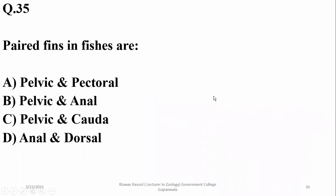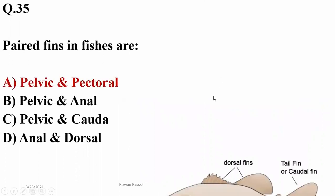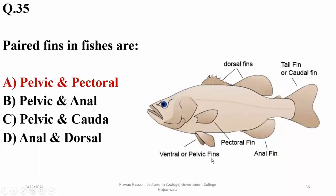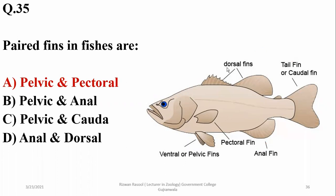Question twenty-eight: the paired fins in fishes are pelvic as well as pectoral — both names starting with 'P'. Other fins are generally unpaired.